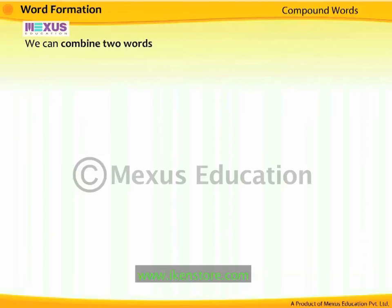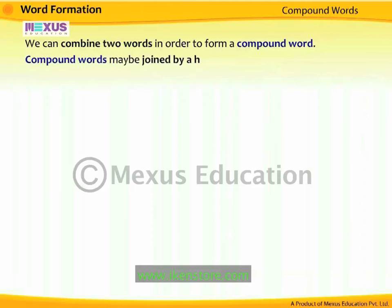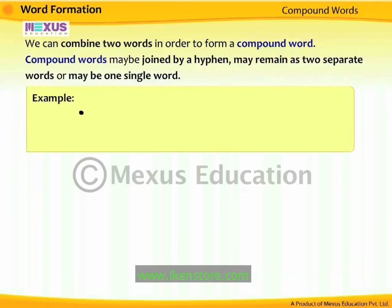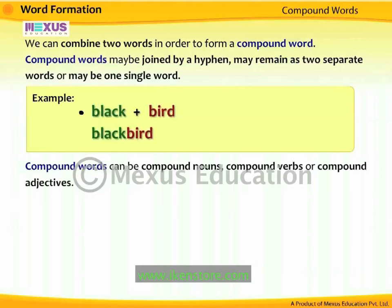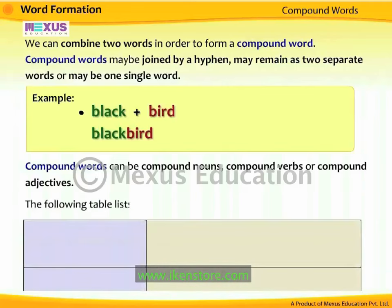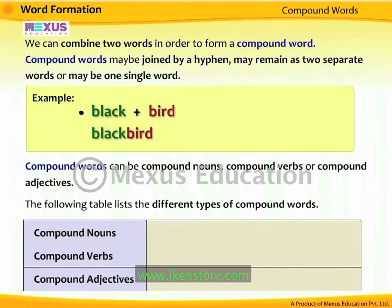We can combine two words in order to form a compound word. Compound words may be joined by a hyphen, may remain as two separate words, or may be one single word. For example, the nouns 'black' and 'bird' can be combined to form the compound word 'blackbird.' Compound words can be compound nouns, compound verbs, or compound adjectives. Examples of compound nouns include 'policeman,' 'notebook,' and 'looking glass.'